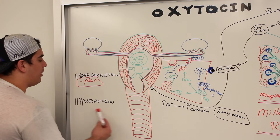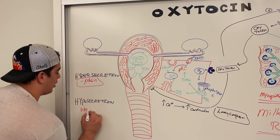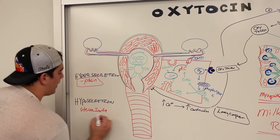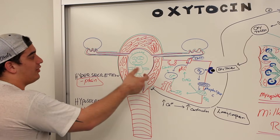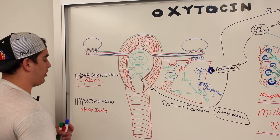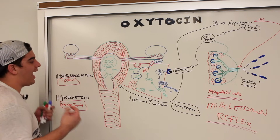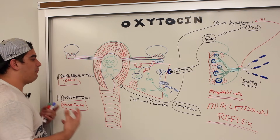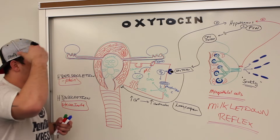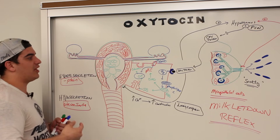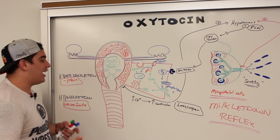Hyposecretion is also not too common but can occur. If there are low oxytocin levels, it can produce a condition called uterine inertia. If they're not making enough oxytocin, the female won't be able to have very strong contractions to push the fetus out — they'll have a very difficult time during the birthing process. So uterine inertia can occur because of low oxytocin levels. Another cause, very uncommon, involves blood vessels: during childbirth, rarely, postpartum hemorrhaging can affect blood supply going from the hypothalamus to the pituitary.